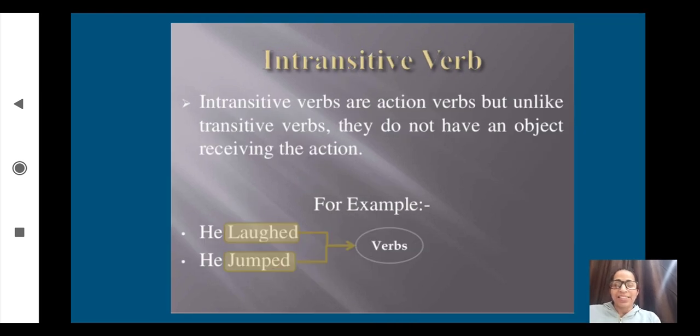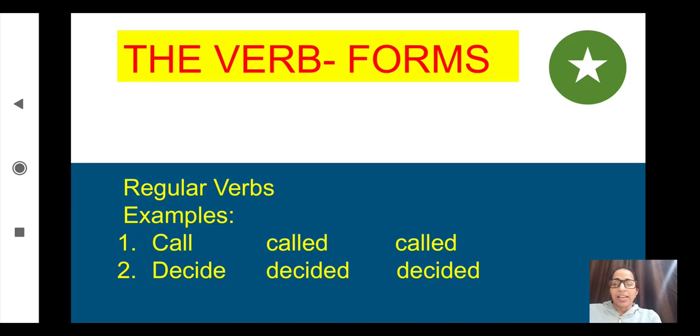Now we will talk about intransitive verbs. A sentence where we do not have an object, which is completed without an object, is an example of an intransitive sentence. You can see the example: he laughed. After this we do not have any information, we do not have an object. Next sentence: he jumped. Again no object. We do not get any information—how does he jump, where does he jump? No such information has been given. These both sentences are ending with a verb and giving us complete sense. That means these both sentences are examples of intransitive verbs.